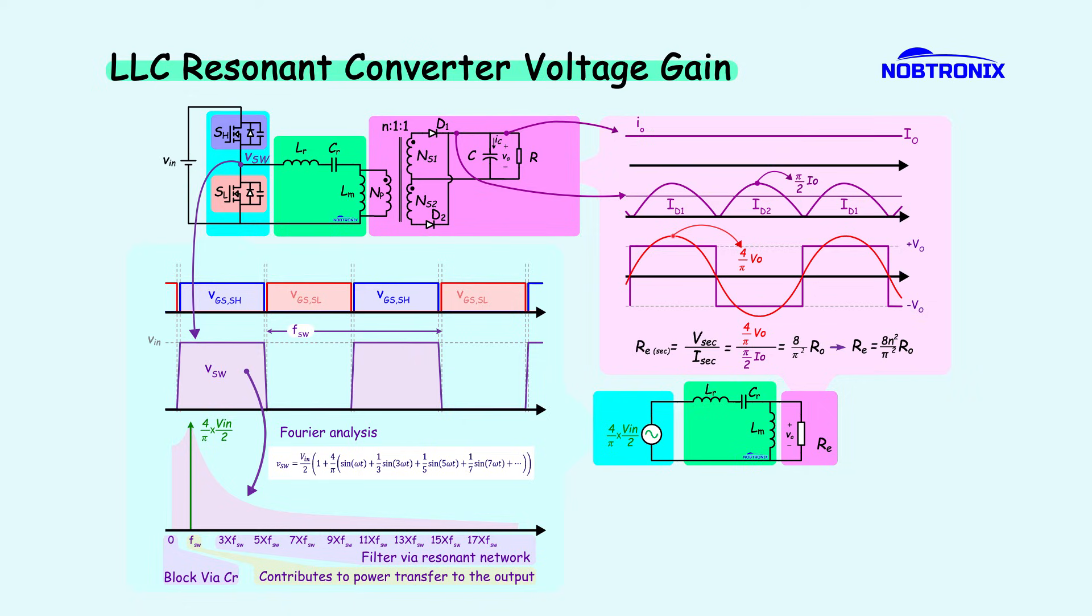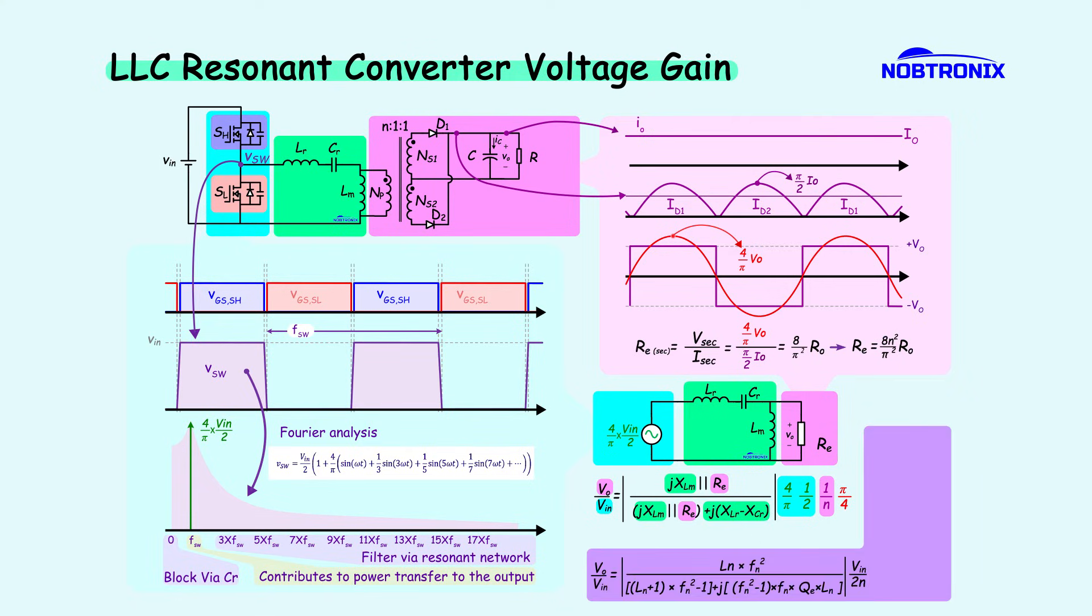The first term represents voltage division between the load impedance and the resonant tank impedance. The second term accounts for the turn ratio of the transformer. Finally, since the input voltage is sinusoidal and its peak value is used, a pi divided by 4 scaling factor is applied when converting it to an equivalent square wave. By simplifying, we obtain the final voltage gain expression.